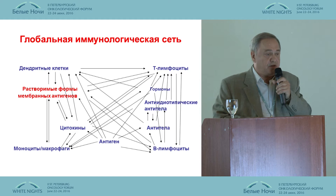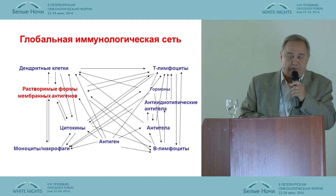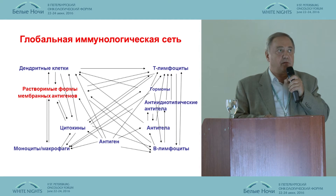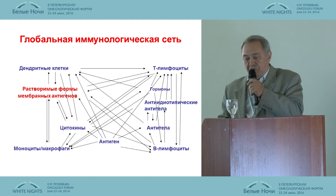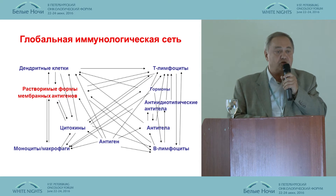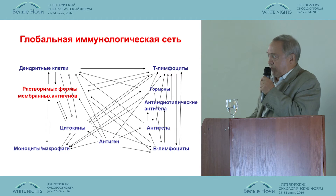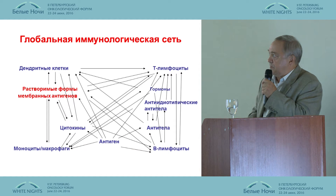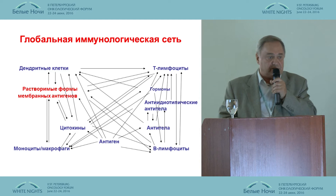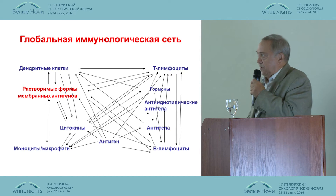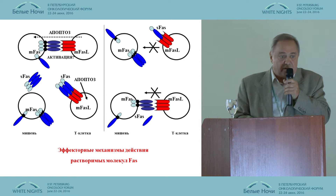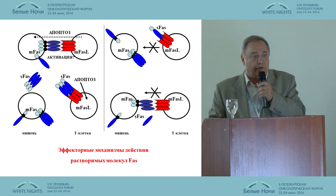This research led us to understand that soluble differentiating molecules and MHC compatibility molecules are yet another class of factors that participate in the immune response. We built a model — a model of a global immunological network — that of course does not contain all possible components. The main point is that soluble forms of membrane antigens of immune cells are yet another component and stakeholder in this global immune network. So how do those soluble differentiating molecules actually work?